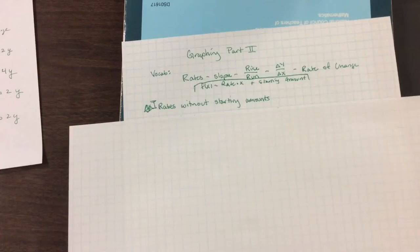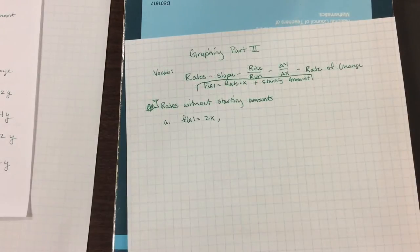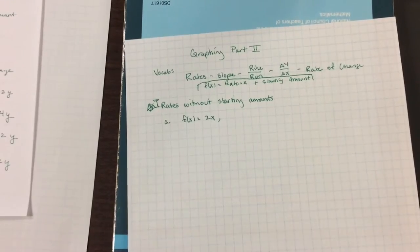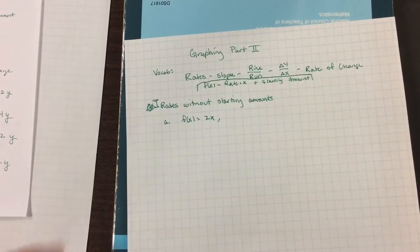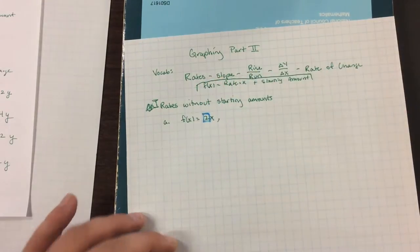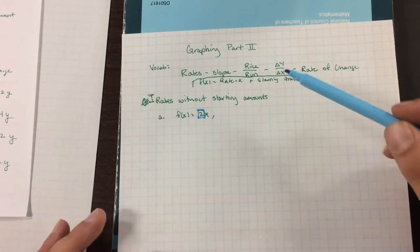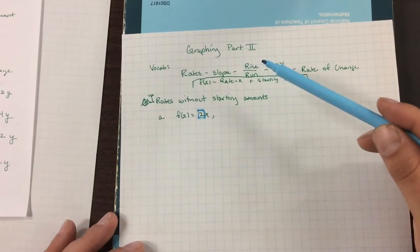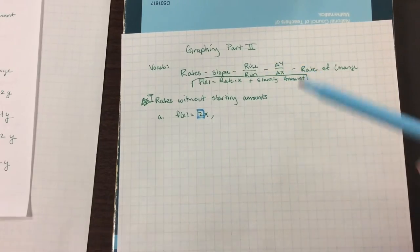The first one we'll look at is f of x equals 2x. When we are looking at f of x equals 2x, we need to identify the rate. And the rate here is this 2. But if we look at the top, rate is always defined as rise over run or change of y over change of x.